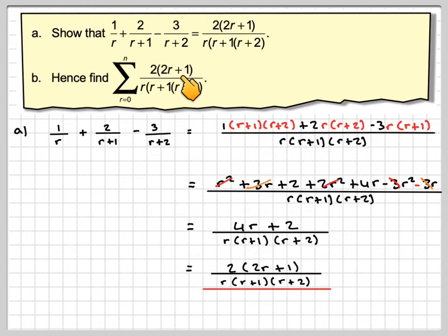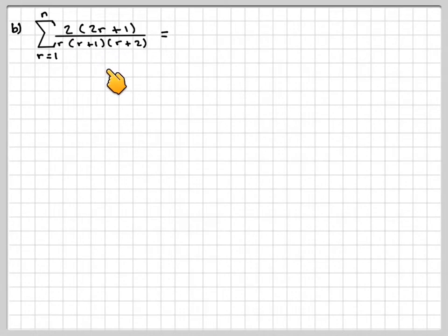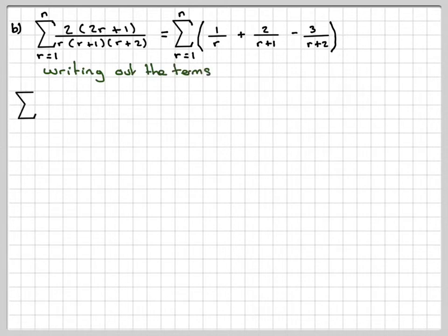Right, so we've done Part A. We now need to find the sum for Part B. It said 'hence' in the question, so we should replace 2(2r+1)/[r(r+1)(r+2)] with 1/r + 2/(r+1) - 3/(r+2). Now if we write out the terms of this summation...